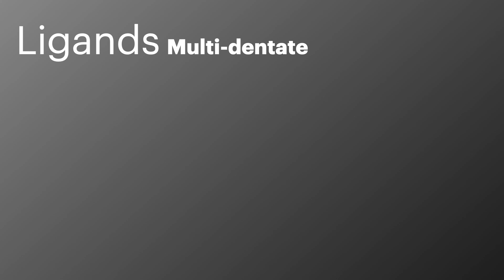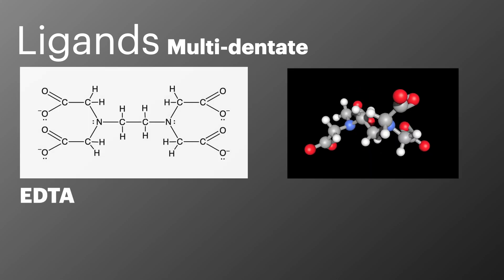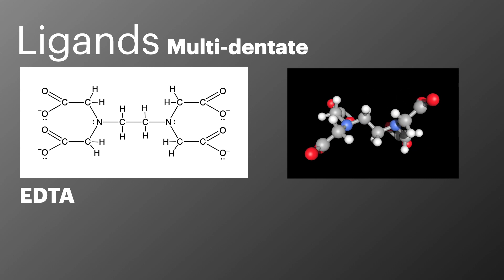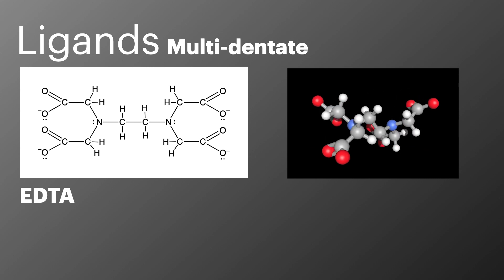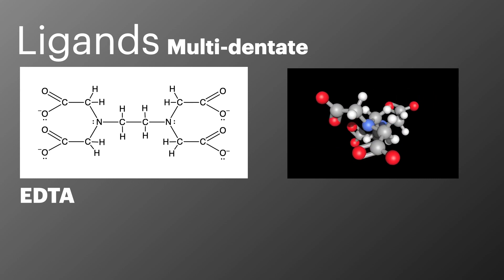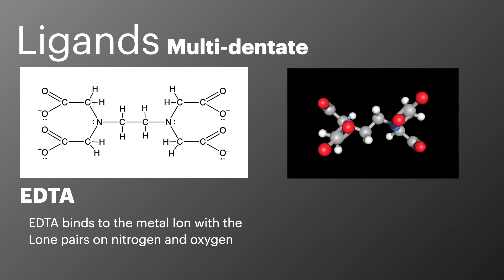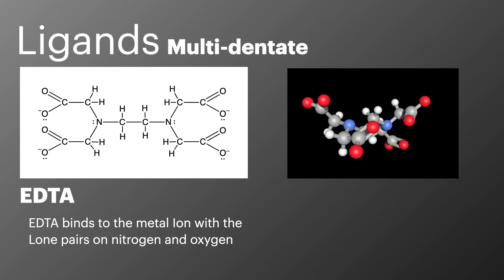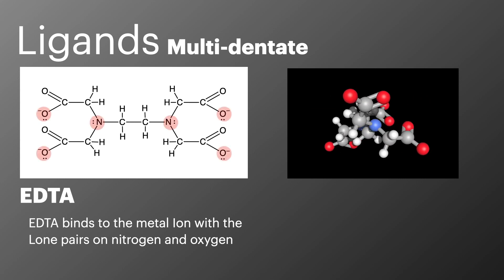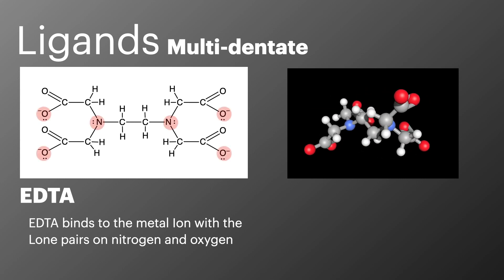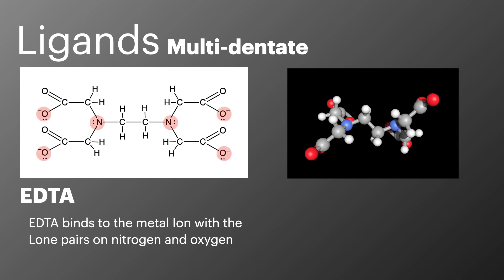The final category of ligand is multidentate, which forms more than two coordinate bonds with the central metal ion. The only example you need to know is EDTA. You don't need to know the actual structure of EDTA, but you do need to know that EDTA binds to the metal ion through the lone pairs on the nitrogens and the oxygens — I've circled those in red here to make them easy to see.